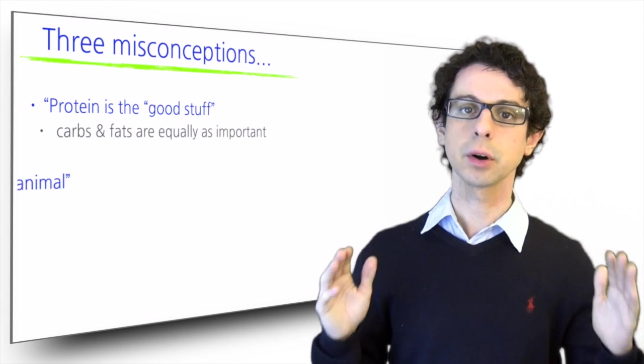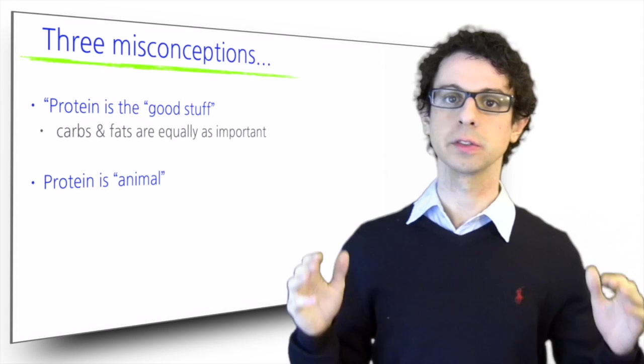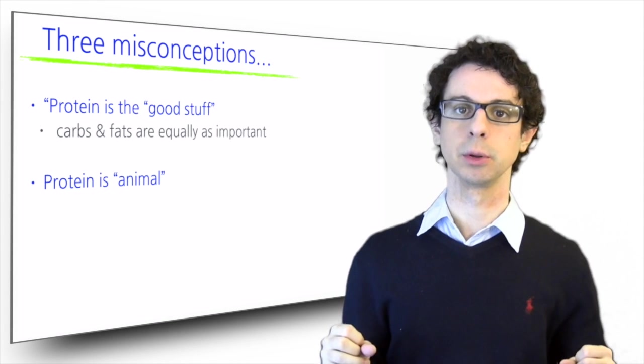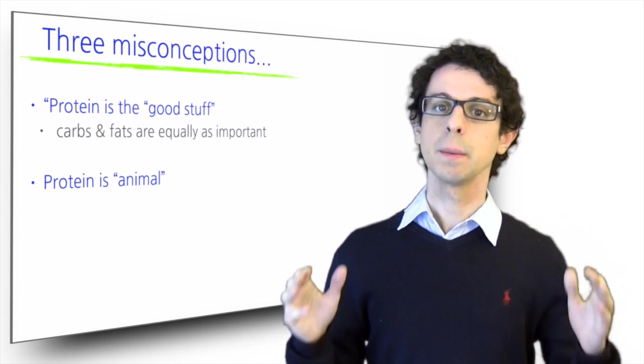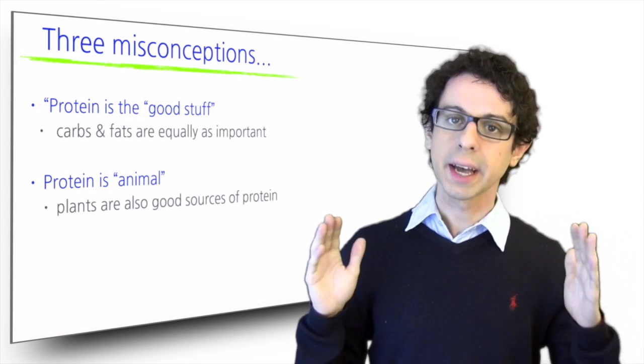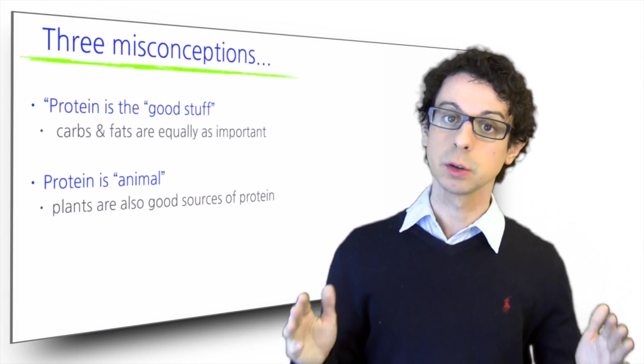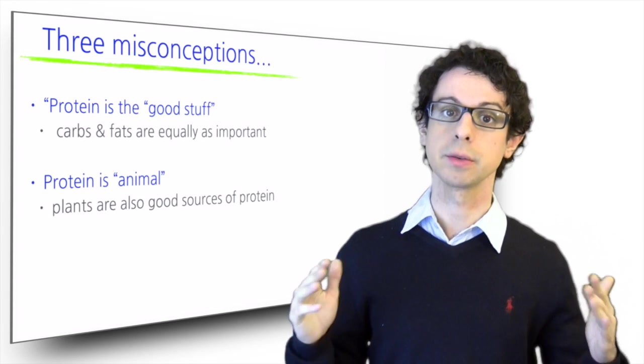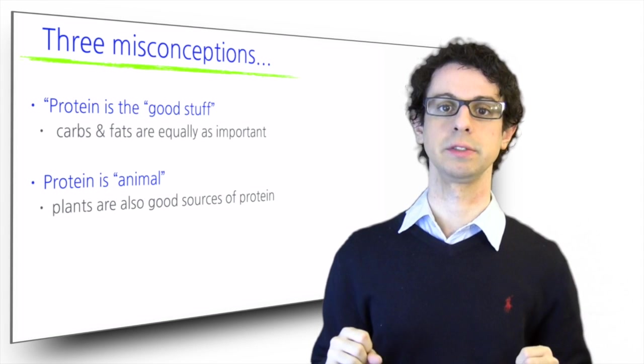Another common idea is that protein is animal, meaning that animal food is the only source of high quality bioavailable proteins. Animal food is indeed an excellent source of protein, but it's not the only one. We can get all the proteins we need also from vegetable food, which is the reason why so many people can perfectly thrive on vegan diets without any problem of protein deficiency.